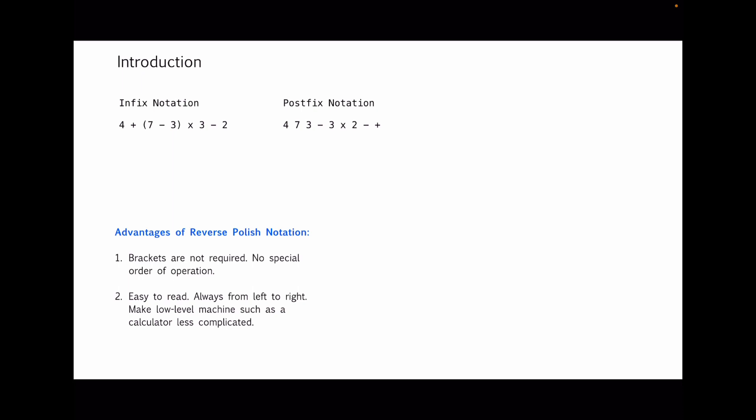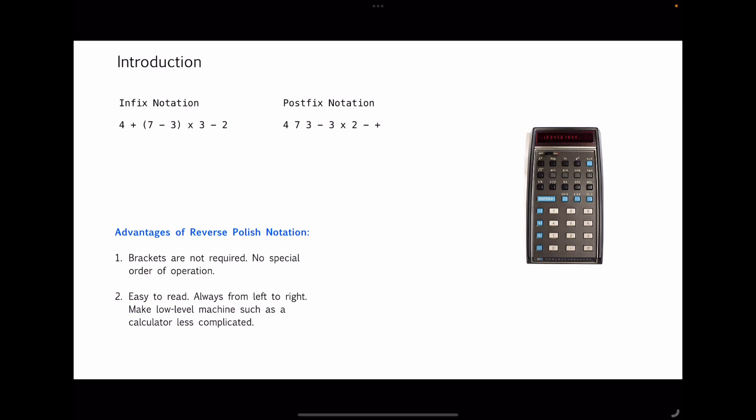One application is that it can be used in calculators. This photo shows an HP certified pocket calculator invented in 1972. We all use calculators and it can be difficult to type in parentheses. With Reverse Polish Notation you just type everything in left-to-right order and there's no need for parentheses. If you look at the photo of this calculator, there is actually no parentheses button, because it uses Reverse Polish Notation.